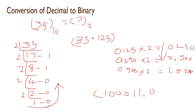The output is 0 0 1 — these are the decimal number binary values. This is the answer: 35 in decimal equals 100011 in binary.